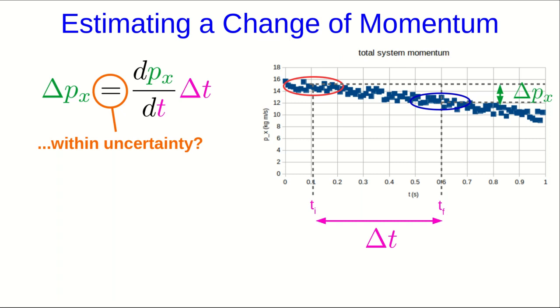But note that we only expect our change in momentum that we measure to equal that predicted change within uncertainty. Now you don't know how to get the uncertainty in the rate of change, and so this equation on the right side, you don't know how to get an uncertainty. That's okay, there are ways to do it, but they're beyond what we can do here.